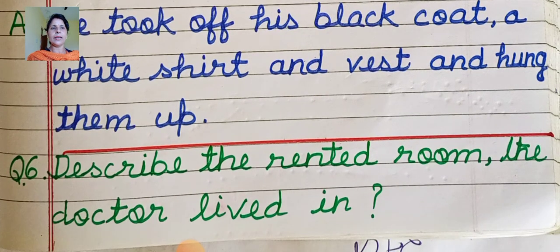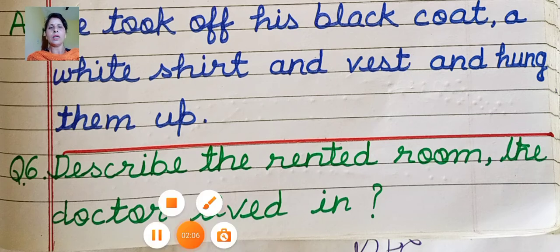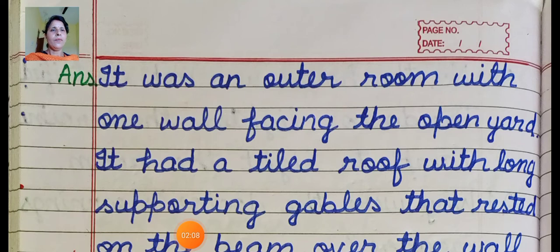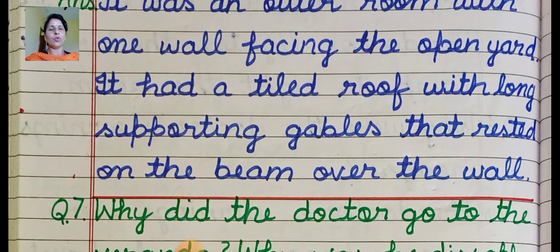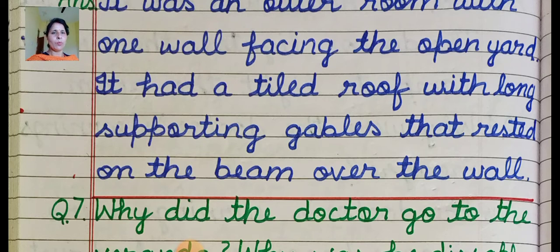Describe the rented room the doctor lived in. It was an outer room with one wall facing the open yard — jis ki ek diwaar yard ki taraf thi. It had a tiled roof with long supporting rafters that rested on the beam over the wall.